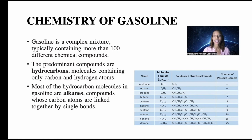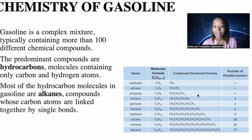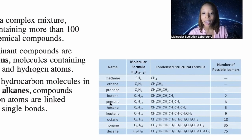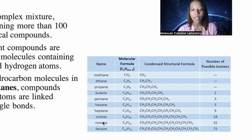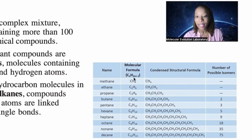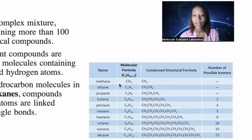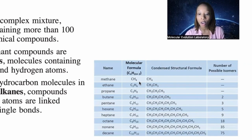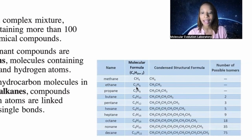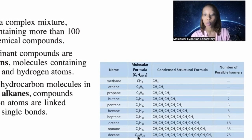Gasoline is a complex mixture typically containing more than 100 different chemical compounds. The predominant compounds are hydrocarbons — molecules containing only carbon and hydrogen. Most of the hydrocarbon molecules in gasoline are alkanes, which are compounds whose carbons are linked together by a single bond. Here is a list of alkanes: methane, ethane, propane, butane, pentane, hexane, heptane, octane, nonane, decane. The molecular formula shows that methane is CH4 — one carbon, four hydrogen.